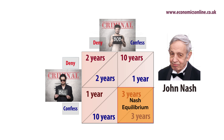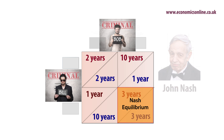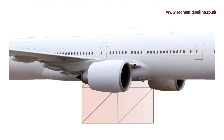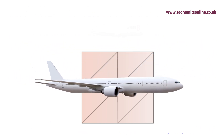Nash equilibrium occurs when any change of decision by a player makes that player worse off, taking into account the action of the other. Once having confessed, prisoners will carry on confessing. Applied to firms, the interdependence of each firm forces it to make certain decisions.